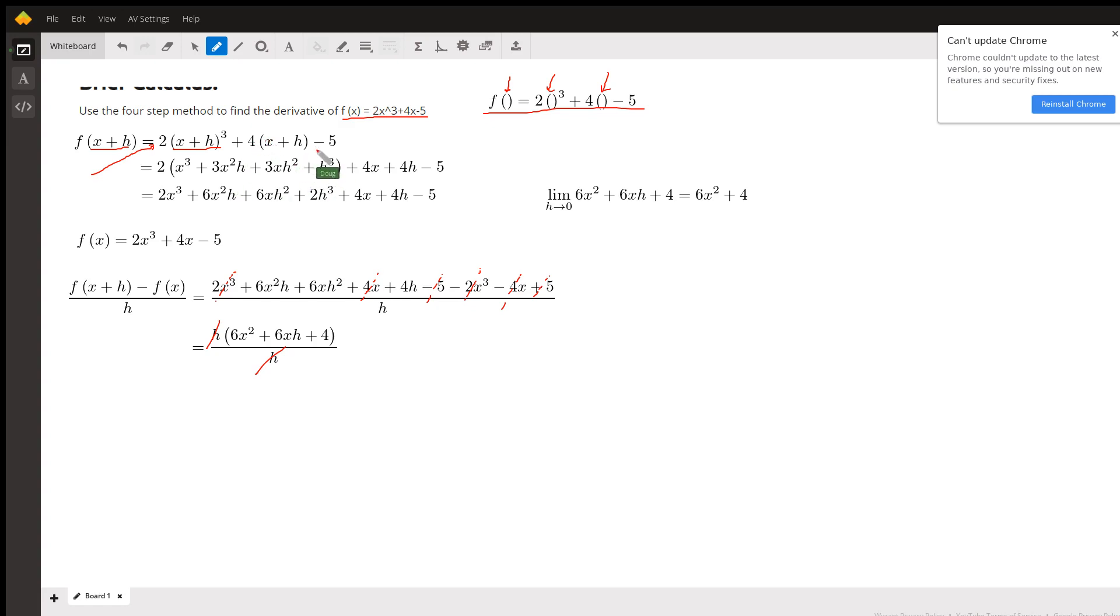We can distribute this 4 over its x plus h and finally distribute this 2 over every term in here. And there's the final form for f of x plus h.